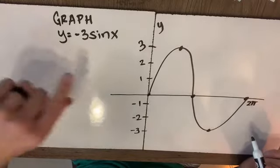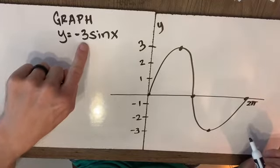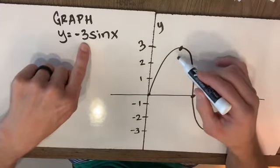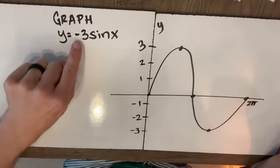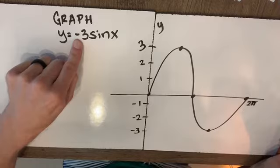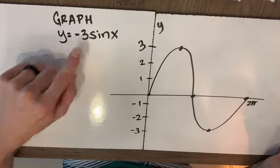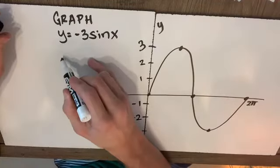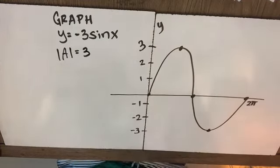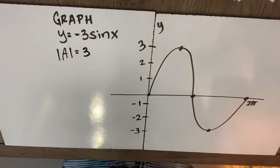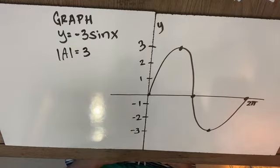Now I've taken care of the vertical stretch or the amplitude of 3. It stretched us away from our center line by a factor of 3. Now we have to deal with this negative. This is a different transformation. Remember I said the amplitude will be an absolute value symbol. Yes it's positive 3. The amplitude is positive 3.